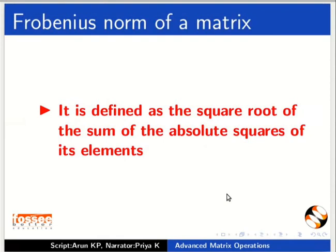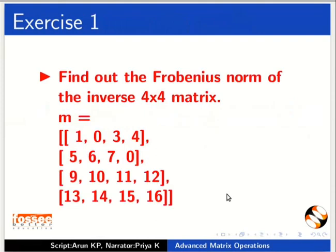Next, we will see about Frobenius norm. It is defined as the square root of the sum of the absolute squares of its elements. Pause the video. Try this exercise and then resume the video. Find out the Frobenius norm of the inverse of the given 4 by 4 matrix.